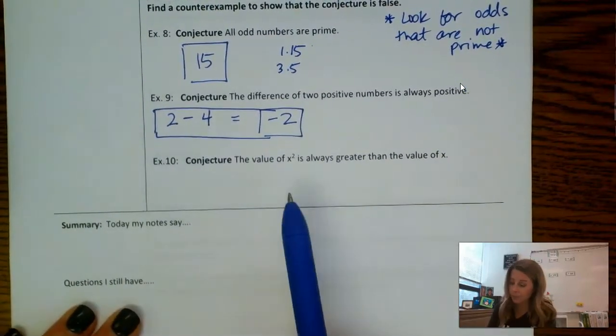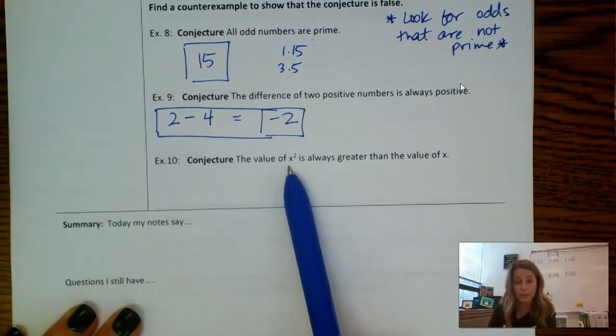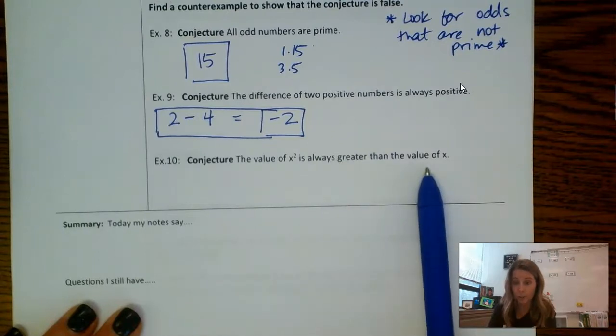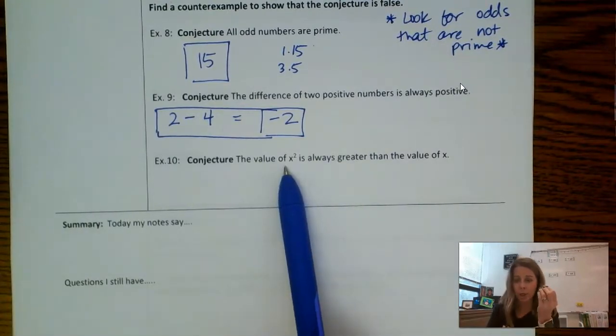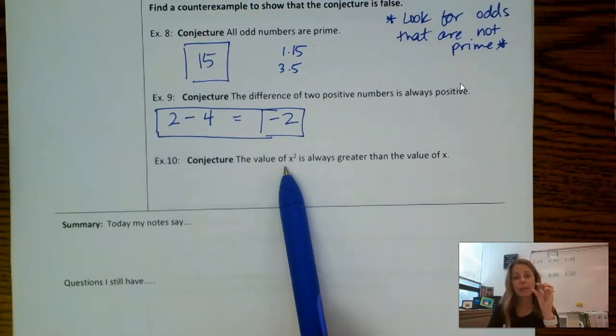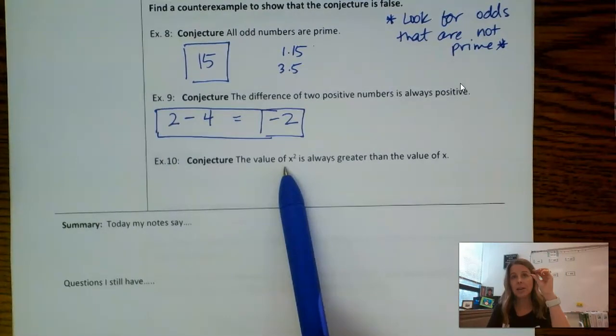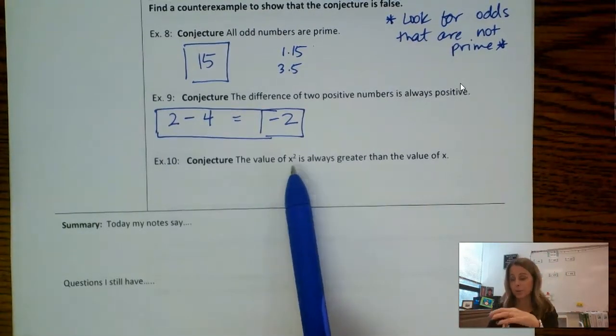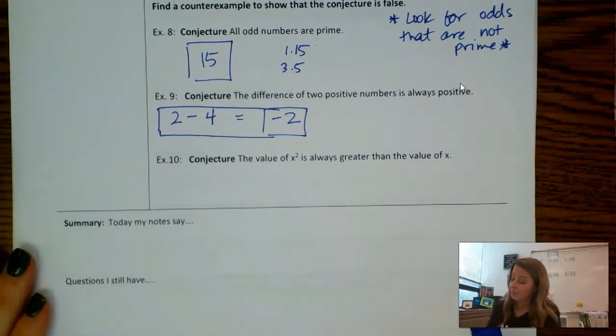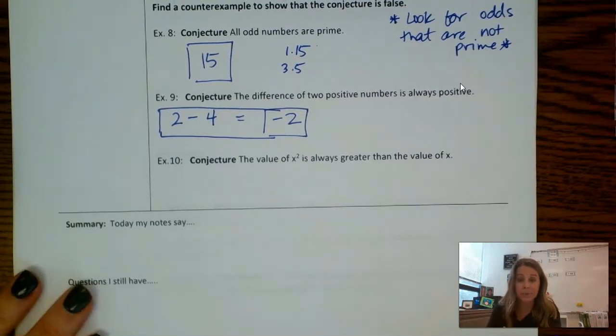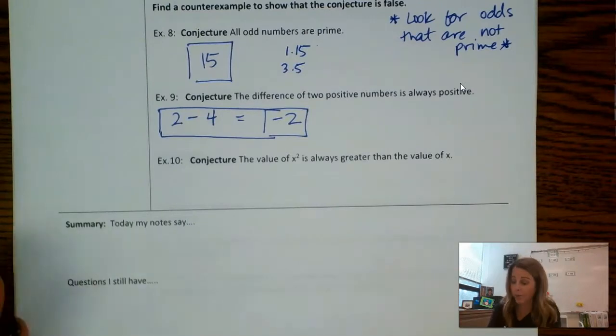Okay, last one. The value of x squared is always greater than the value of x. So what this is saying is the value of a number, so let's take a number. And if you take a number and you square it, that value is always bigger than your original number. That's what this is saying. Okay, so let's just pick, I don't know, let's start out with 1.